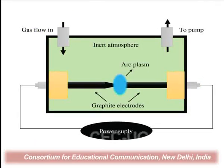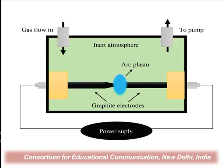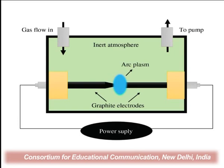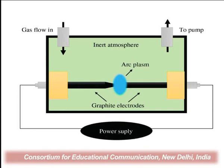In the diagram we see how we prepare the fullerenes. The graphite rods are attached to a power supply — one works as the anode and another as the cathode. An arc is produced between these two graphite rods, placed in a chamber where inert gas or helium gas is passed. Plasma is generated from the anode and transfers to the cathode. The vaporized molecules deposit on the cathode rod, and from the cathode rod they are extracted using a solvent.